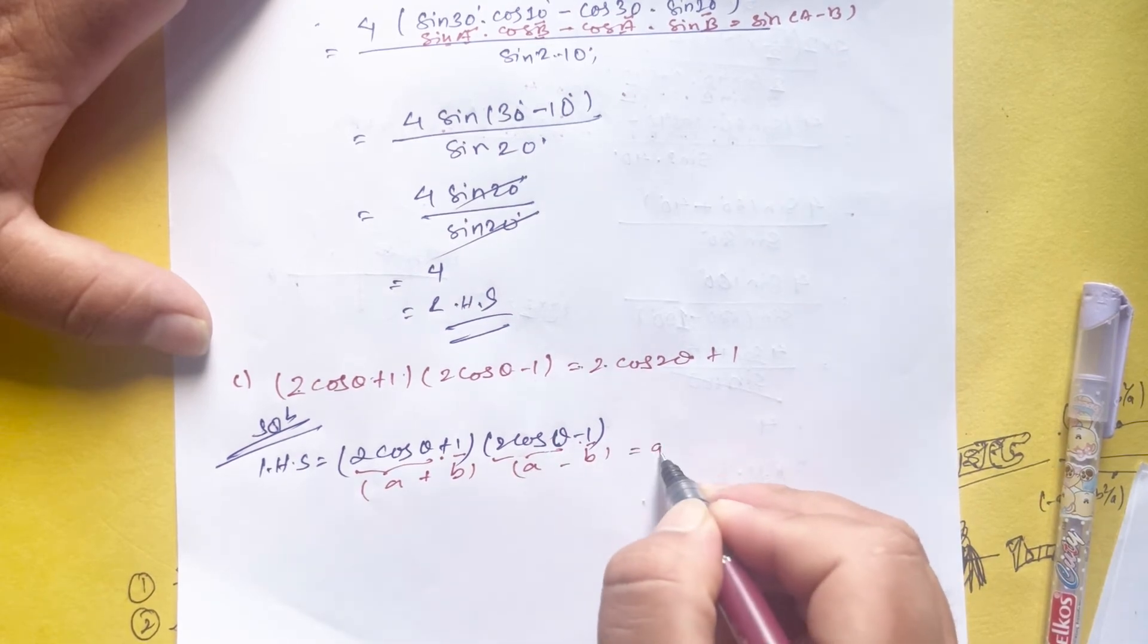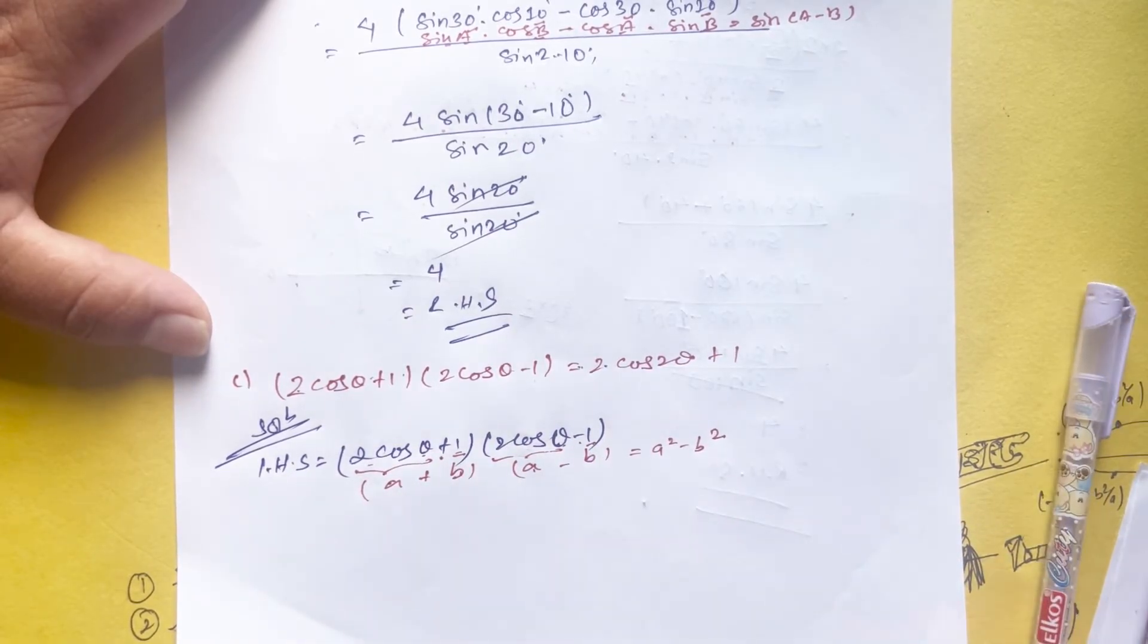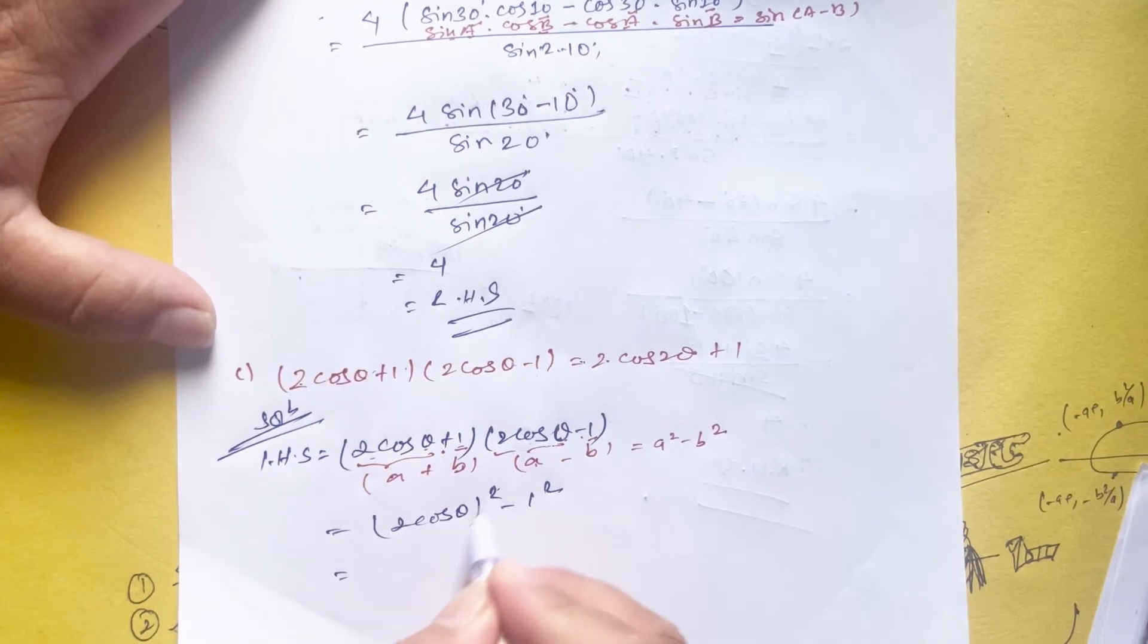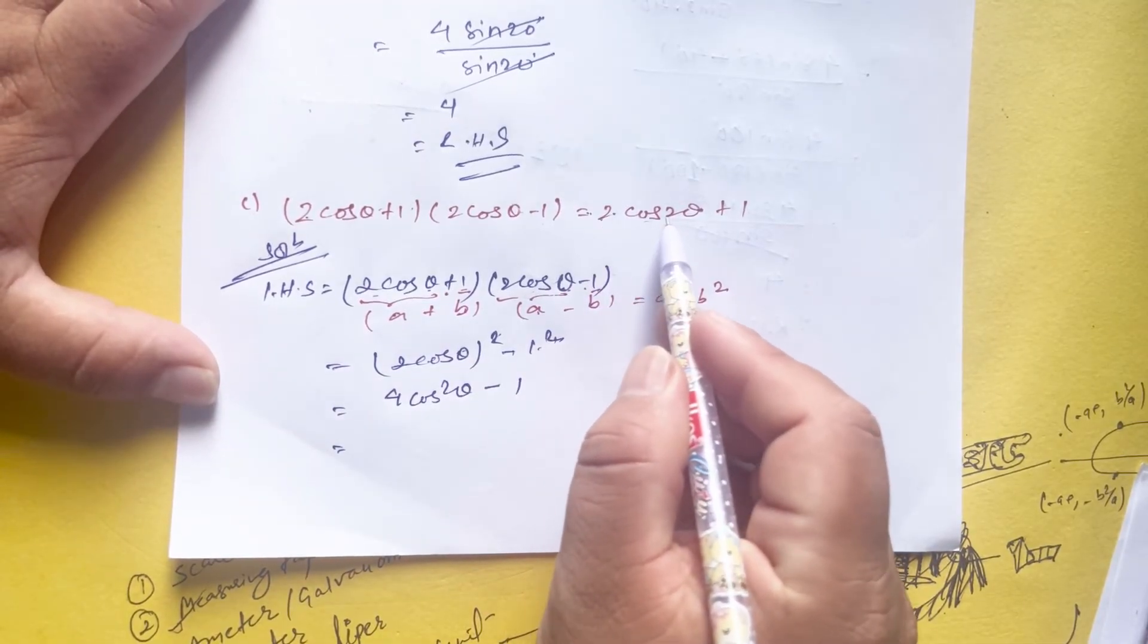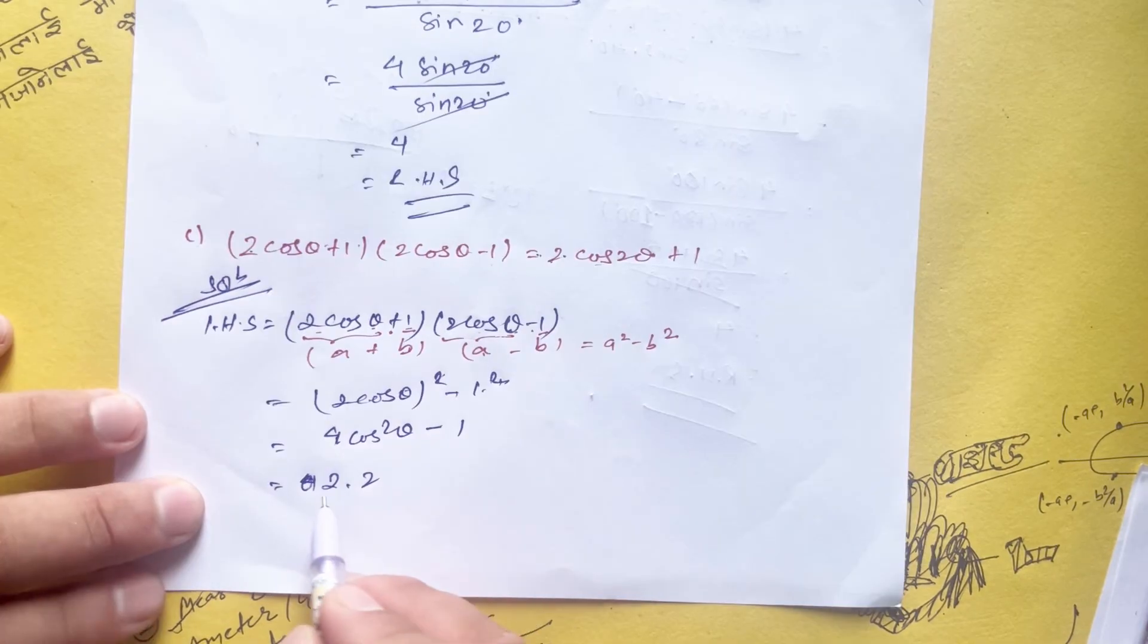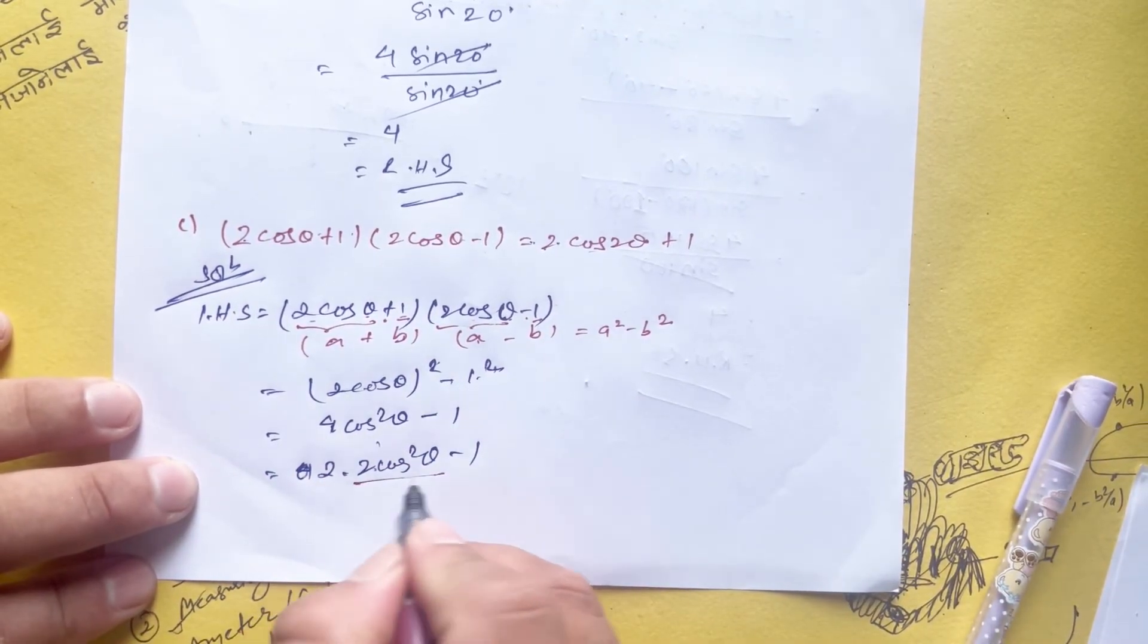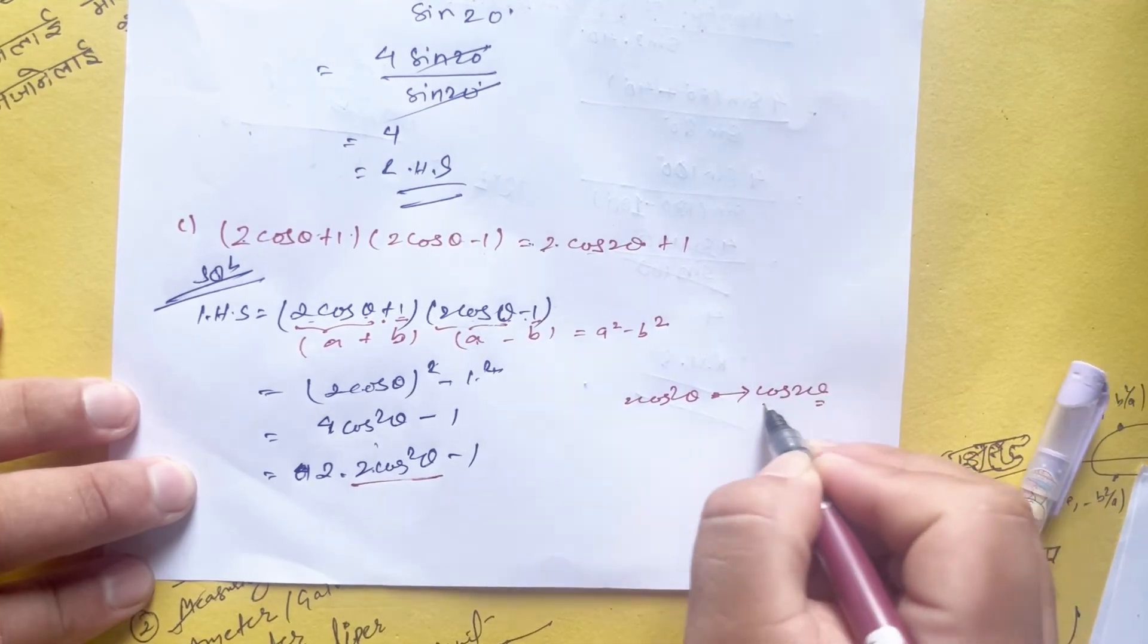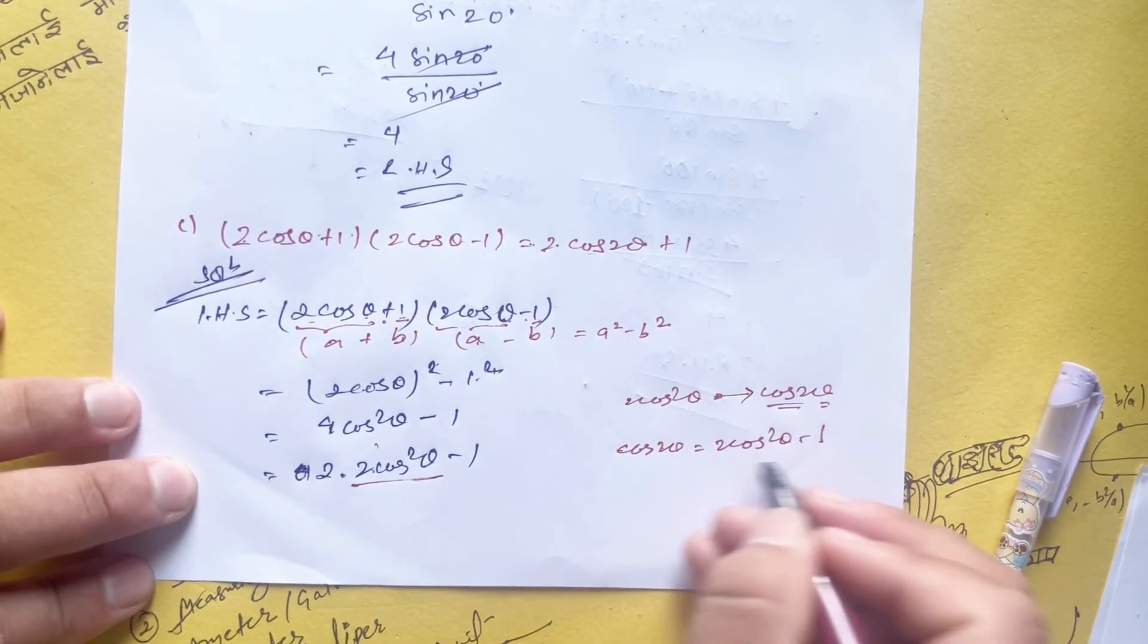Using the formula (a + b)(a - b) equals a² - b², where a is 2 cos theta and b is 1, we get (2 cos theta)² - 1². This equals 4 cos² theta - 1.